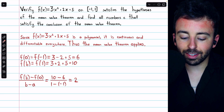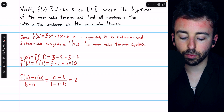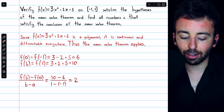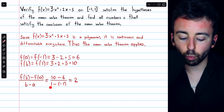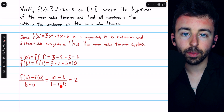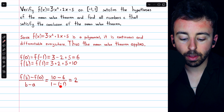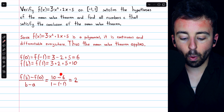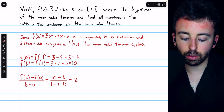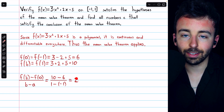So the function starts at six and it ends at ten. We can find the average rate of change by doing ten minus six divided by the ending x-coordinate, one, minus the beginning x-coordinate, negative one. This is four divided by positive two, so the average rate of change is two.